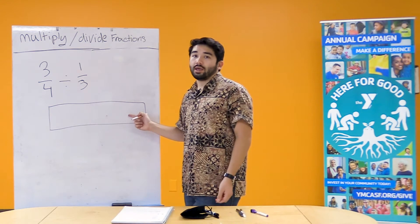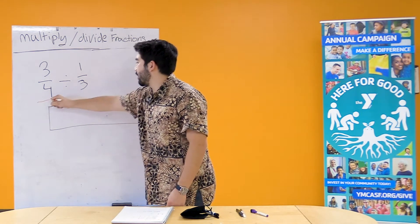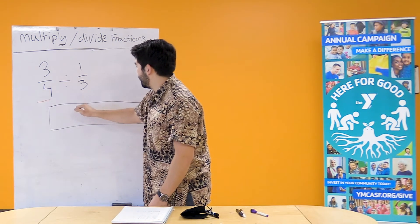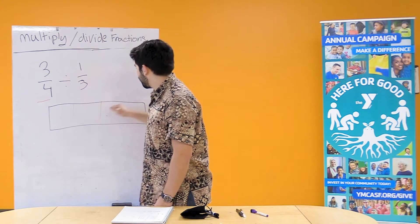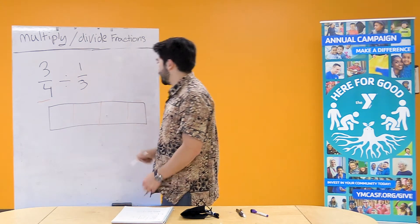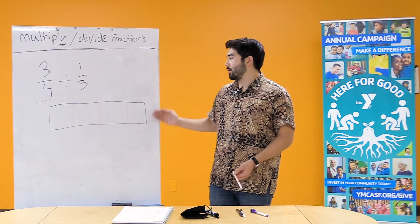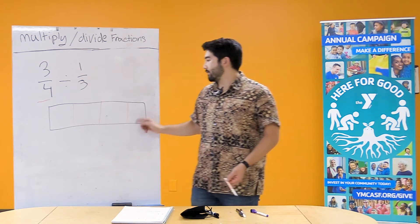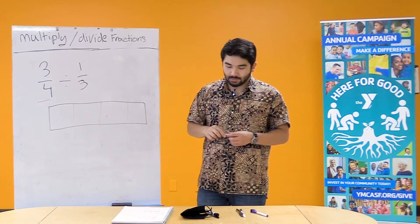break our one whole into fourths. So I'm gonna put orange just so we know that the orange represents our fourths. And go like that. So now what I did is I broke our one whole into fourths. One, two, three, four. Okay.